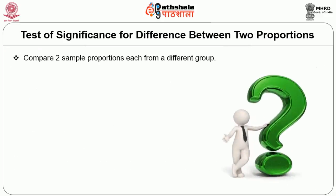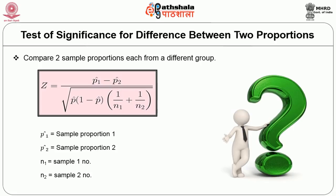Let us now move on to the test of significance for difference between two proportions. This test compares two sample proportions, each from a different group — are the two groups the same or different? The formula for the Z-test is given here, where p-cap-1 is sample proportion 1, p-cap-2 is sample proportion 2, n1 is the sample 1 number, and n2 is the sample 2 number.